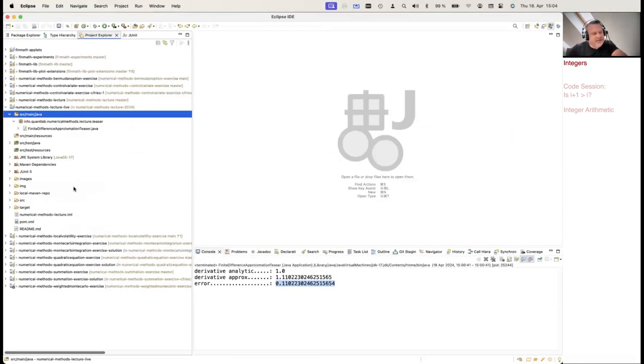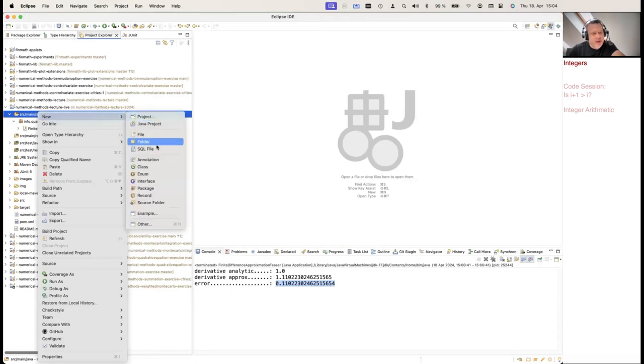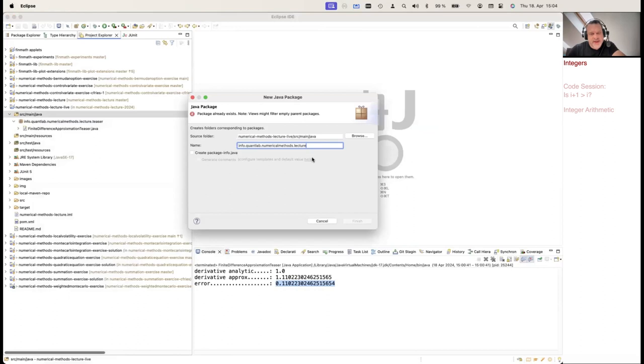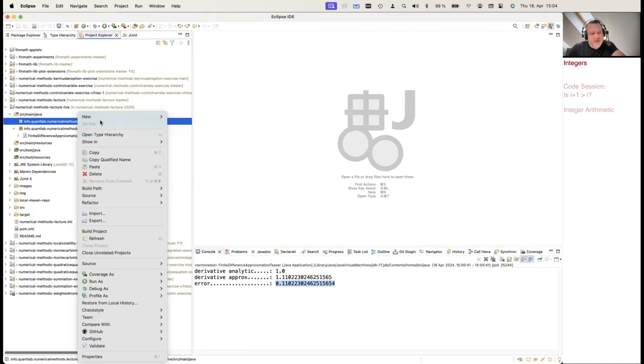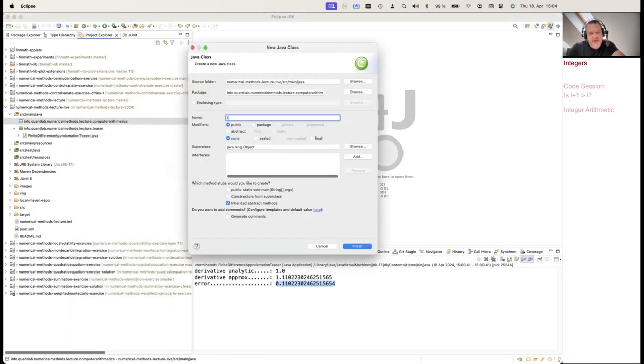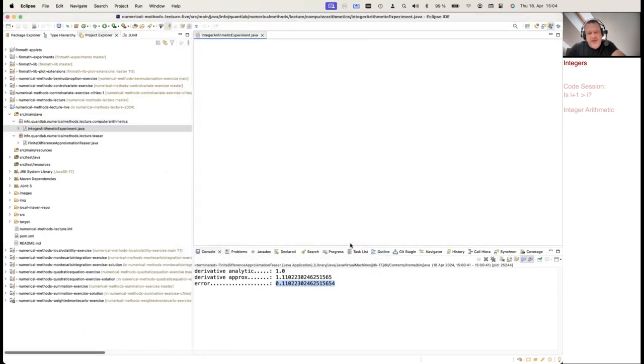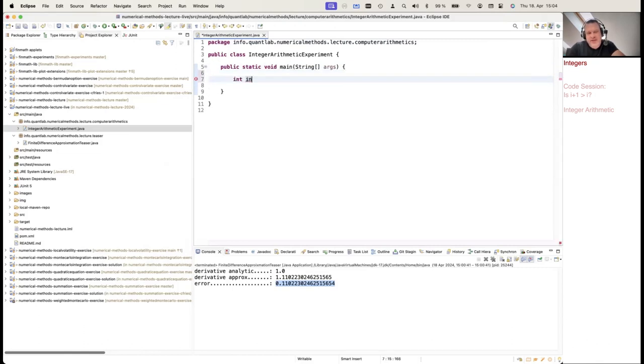So maybe I just try this. Let's create a new package for our experiments. So this is now numerical methods lecture, constructor arithmetic. And let's create an integer arithmetic experiment. So create a new class which is called my integer arithmetic experiment. I would like to have a main method so I can run this. And I can maybe just create integer min value. So I can just ask the integer class, give me the min value. And I can maybe create integer max value, and maybe I can just print them out.